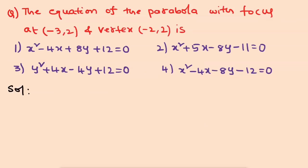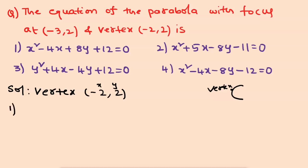We have another question from the AP EAMCET set. The equation of the parabola with focus at (minus 3, 2) and vertex (minus 2, 2). We have options, and we must verify which option satisfies the vertex and focus. We substitute the vertex x equals minus 2, y equals plus 2 into the options.